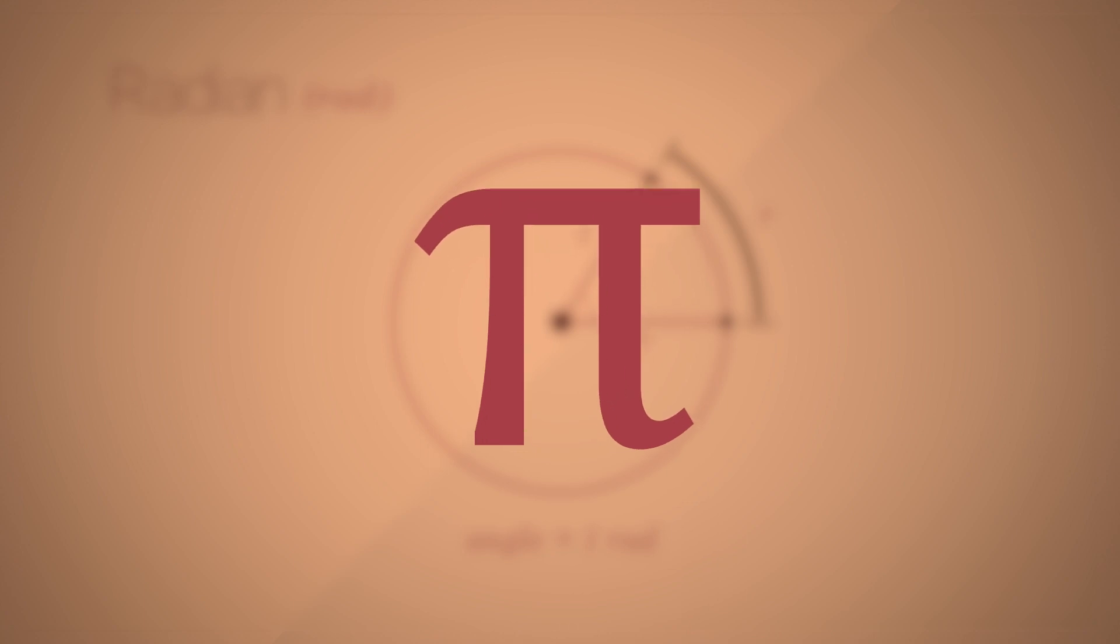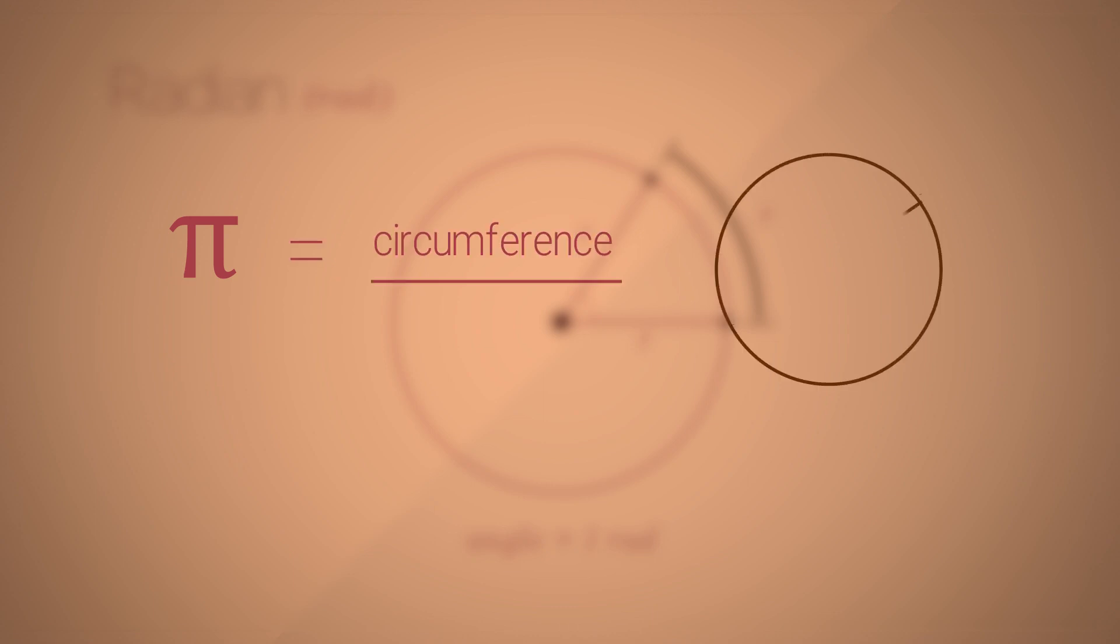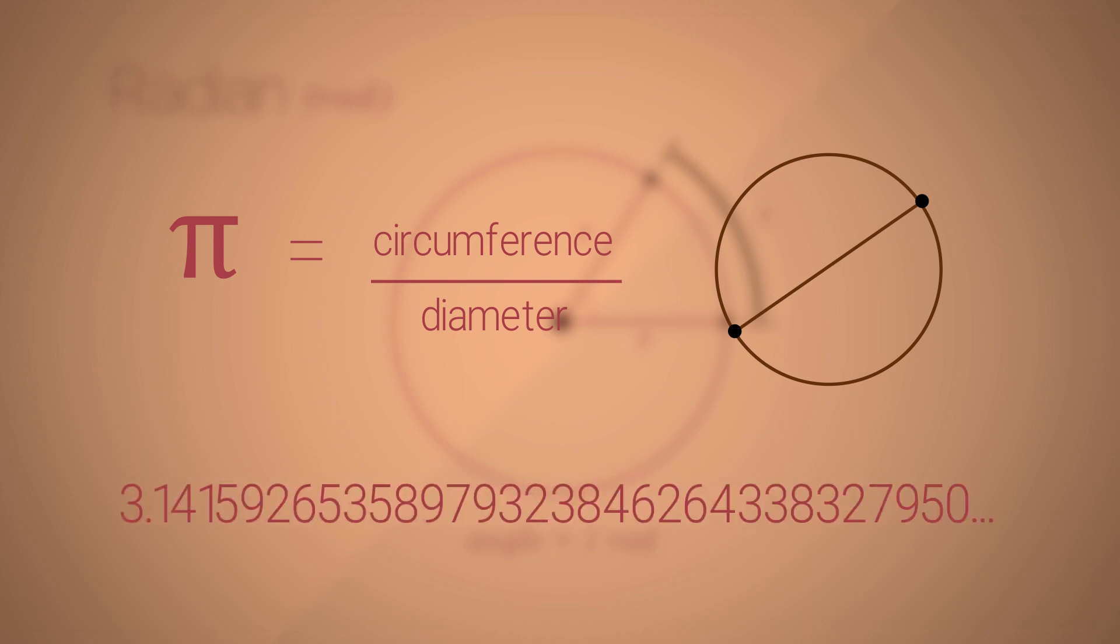Whole books have been dedicated to the study of pi. So keeping it brief, it's the ratio of the circumference of the circle to its diameter and it's a universal constant, the golden number of 3.14159 and so on. So if the mathematics of rotation were to refer to this constant, we know that it will be universally valid.